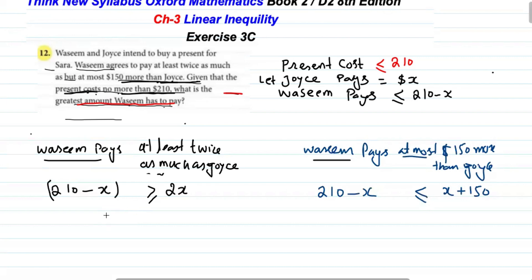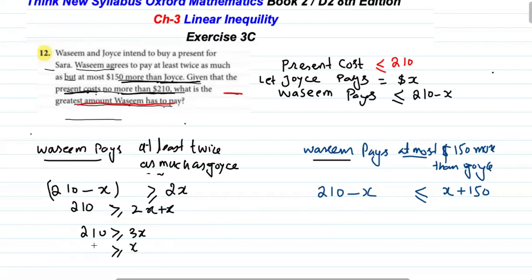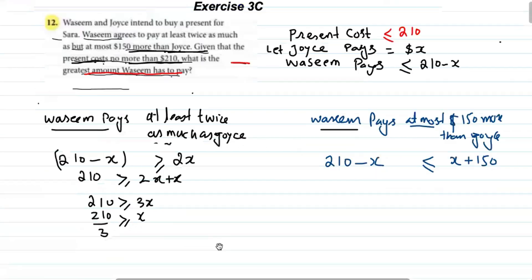Now we simplify the first inequality: 210 minus x greater than or equal to 2x. Shifting x to the right side gives 210 greater than or equal to 2x plus x, which is 3x. So 3x is less than or equal to 210. Dividing both sides by 3, we get x is less than or equal to 70.